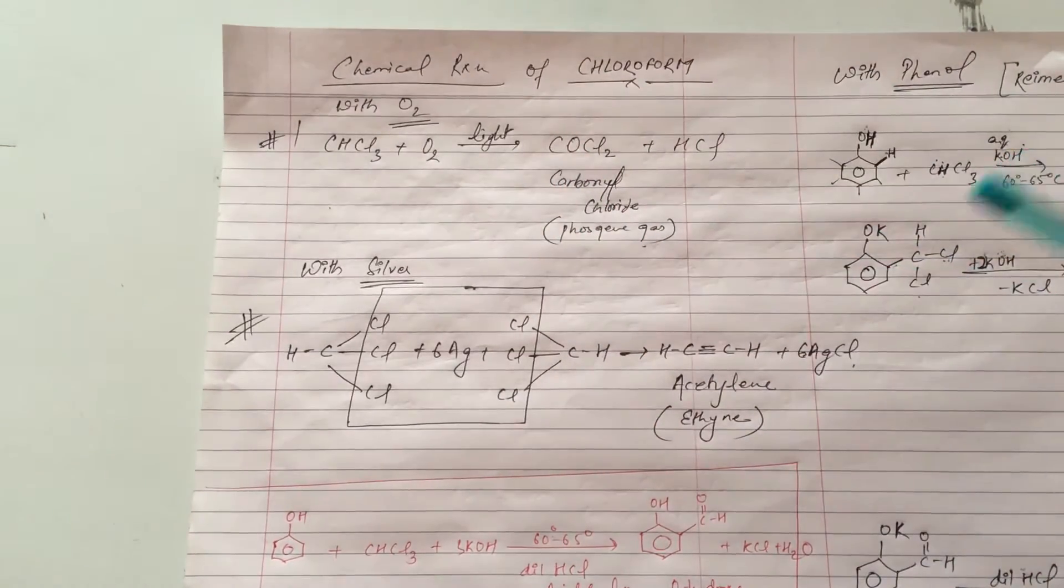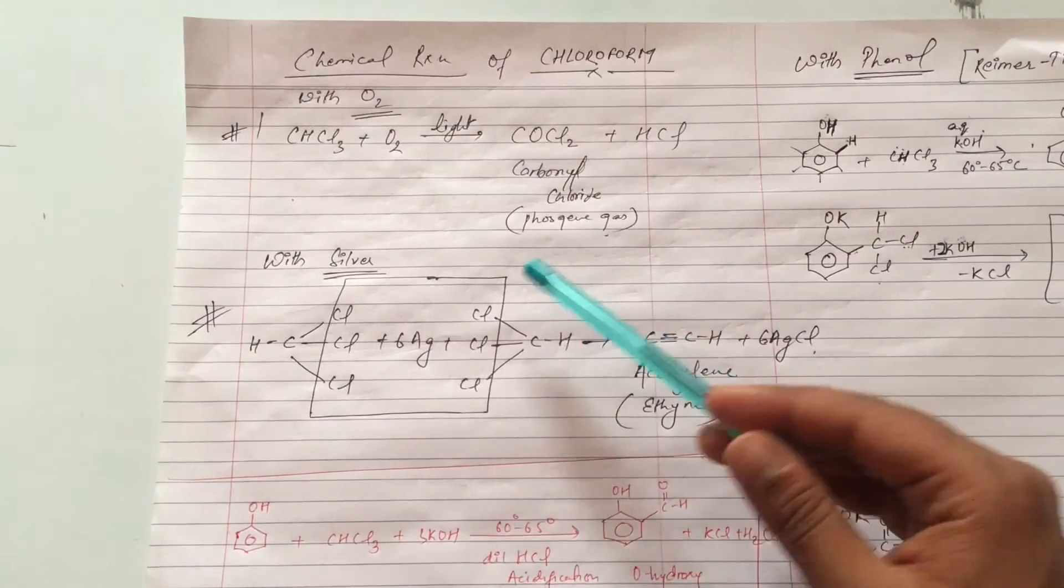Generally chloroform is stored in an amber colored bottle. This is another important reaction. Silver form reaction is with chloroform molecule.